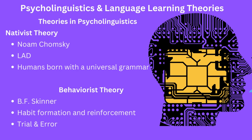The second important theory is the behaviorist theory, which states that the behavior of an individual is shaped by its environment and that behavior is learned through reinforcement. The theory suggests that language is learned through a process of classical conditioning. Children learn language through exposure to language and reinforcement of language-related behavior. This theory was proposed by B.F. Skinner. Both nativist and behaviorist theories have their own strengths and limitations and are important in the field of psycholinguistics.